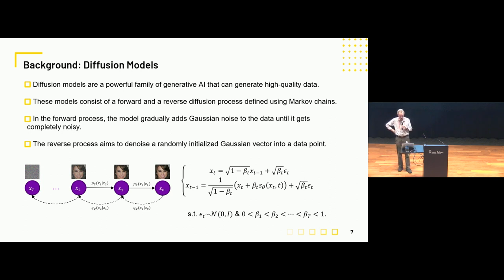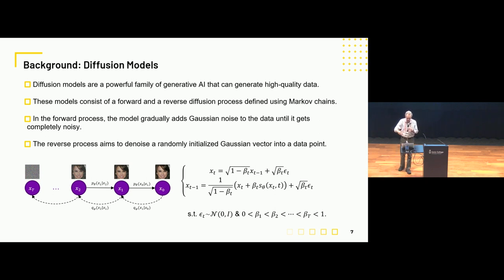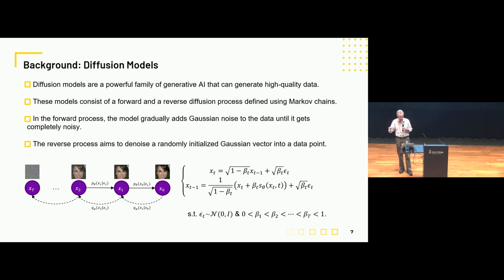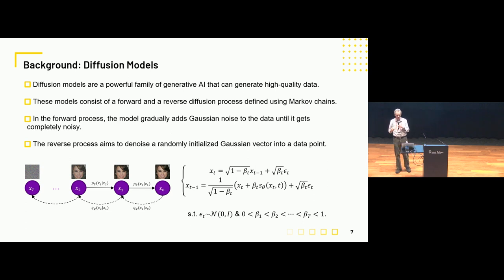Just to remind you: in a diffusion model we go through a forward pass where we add Gaussian noise in stages to an image, and then go through a reverse diffusion process based on a Markov chain that reconstitutes and denoises the image. By adding noise in stages we're able to systematically remove the noise and reconstruct the image. We train a model denoted by S on some dataset that allows us to perform this denoising process.